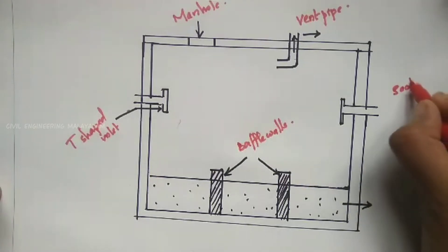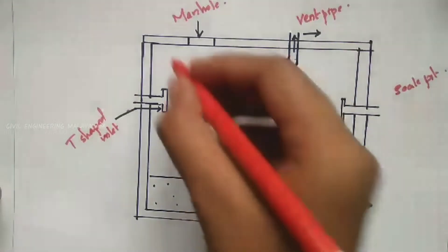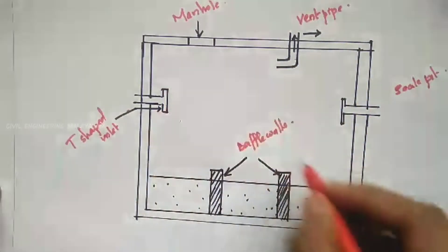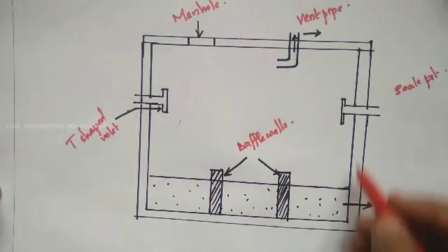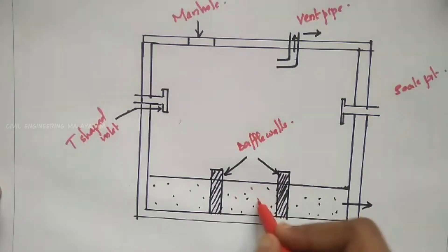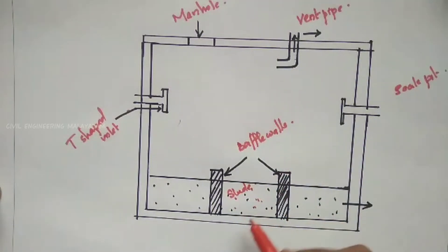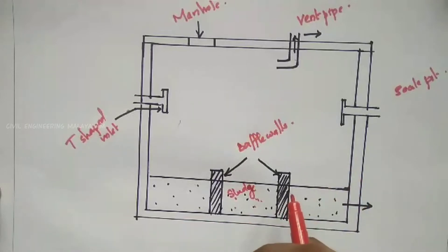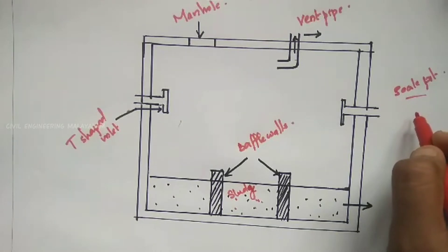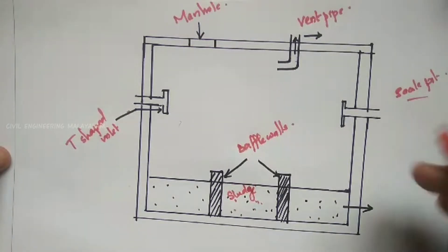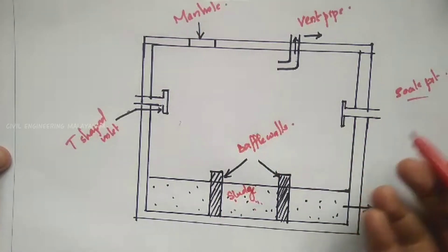Generally, the soak pit receives the treated effluent. Here we have a rectangular chamber. It is a rectangular underground chamber, and we use concrete construction. It also has a concrete lining and can be installed directly at the soak pit.